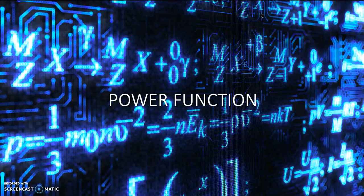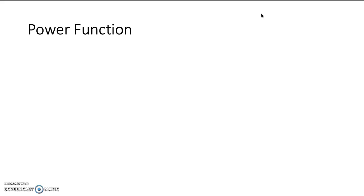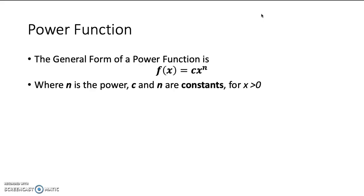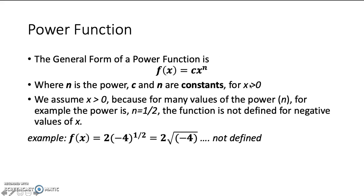So our last discussion of the type of function is power function. The general form of a power function is as shown here, where n is the power, x is the base, and c is the constant. And c and n would be constants for x greater than 0.